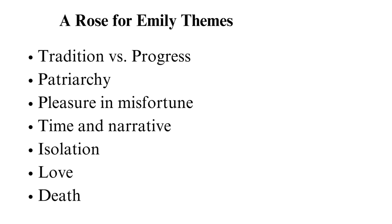Isolation: Emily is isolated from the community by locking herself in the house and from marriage life. At first, her father contributed to her isolation, and then it was due to her own behavior of not changing from her old self. Love: an irrational and destructive nature of love is present in A Rose for Emily, resulting in massive plot development. Emily develops this kind of love towards Homer, and when Homer refuses to marry her, she kills him by poisoning him.